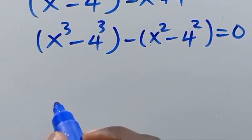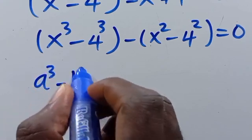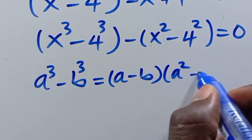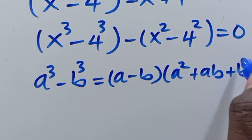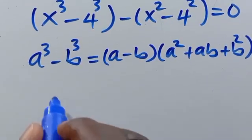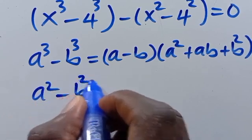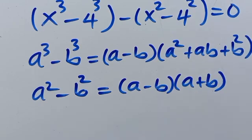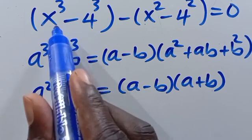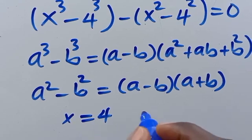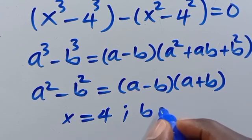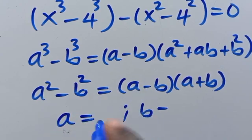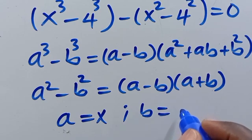We recall that a to the power of 3 minus b to the power of 3 always equals (a minus b)(a squared plus ab plus b squared). And a squared minus b squared always equals (a minus b)(a plus b). Comparing with our expression, a equals x and b equals 4.